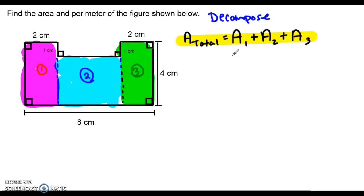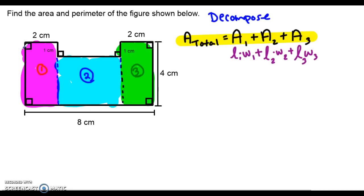To find the area of Rectangle 1, I'll need the length times the width of Rectangle 1. The length of Rectangle 1 — I don't see it labeled, but I can look at the opposite side to figure out how long it is. This is going to be 4 centimeters long. So 4 times the width of Rectangle 1, which is 2 centimeters.